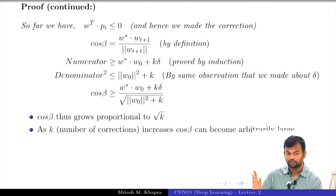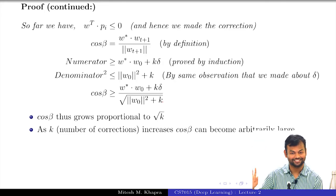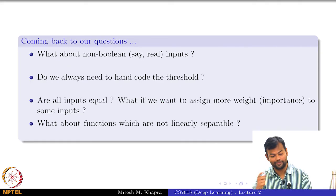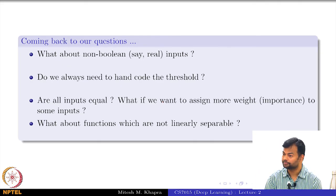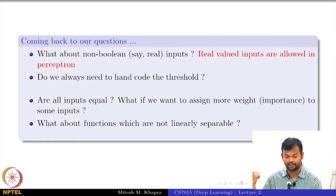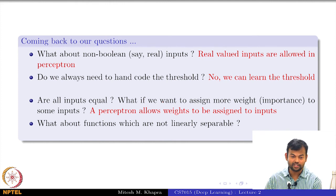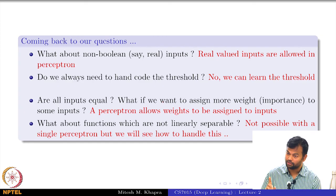So we are done. This says that we can only have a finite number of k updates, and after that the algorithm will converge — we have a proof of convergence. Coming back to our earlier questions: What about non-binary inputs? The perceptron allows that. Do we always need to hand-code the threshold? No, we now have the perceptron learning algorithm. Are all inputs equal? No, we now assign weights to inputs. What about functions which are not linearly separable? We still do not know — that is where we are headed. It is not possible with a single perceptron, but we will see how to handle this. We will end this module here.